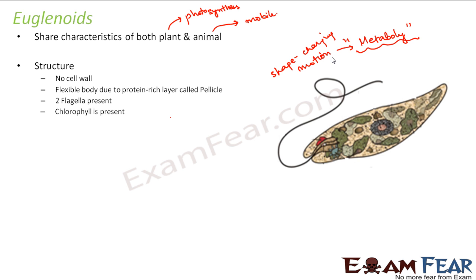Talking about the structure, Euglenoids do not have a cell wall — unlike the previous two groups, dinoflagellates and chrysophytes, which had rigid cell walls. The body is flexible due to a protein-rich layer called the pellicle. Because of this flexibility, when they move with the help of two flagella, the entire body whirls, moves, and changes its shape.